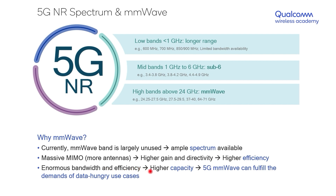These two advantages — enormous bandwidth availability and greater signaling efficiency — directly result in higher user capacity as well as network capacity. That is what ultimately positions 5G millimeter wave to fulfill the demands of upcoming data-hungry use cases such as cloud computing, data management, and virtual and augmented reality. This is why 5G millimeter wave receives as much attention in the media as it does.